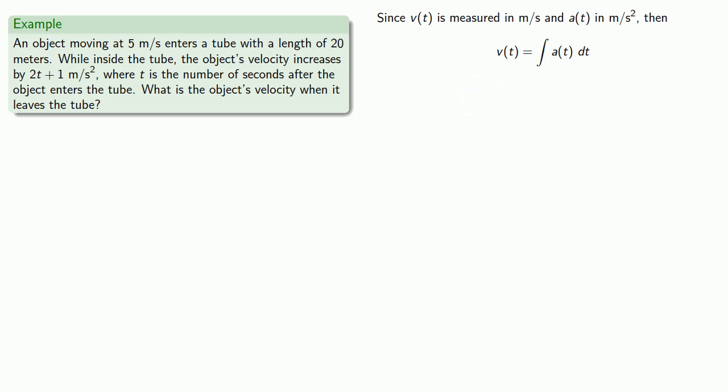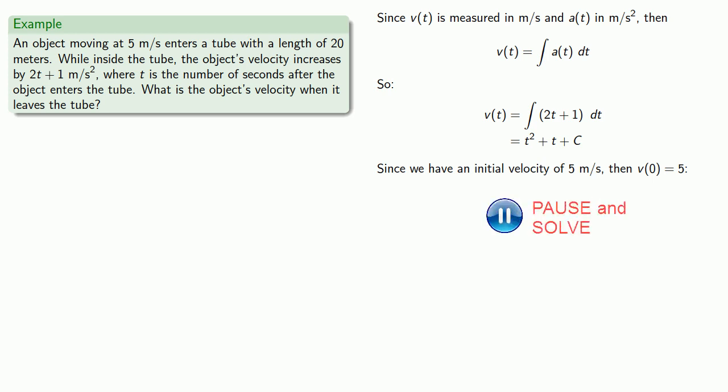I have a formula for a of t, so I can find v of t by anti-differentiation. How about this constant of anti-differentiation? Since we have an initial velocity of 5 meters per second, then I know v of 0 must be 5, and so this tells us what c is equal to. That gives me my formula for the velocity of the object.